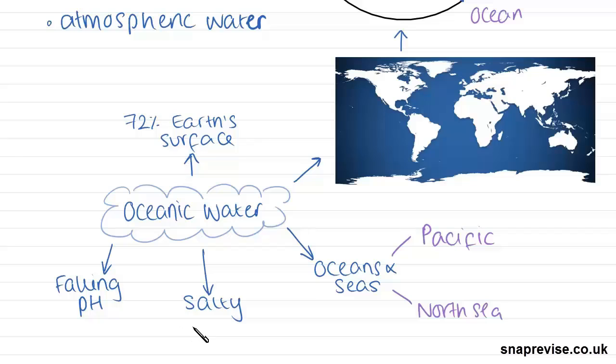And as you might know, the oceanic water is typically very salty, and it also has a falling pH, which means it is becoming more acidic over time. And we'll look at this later on in a different video.